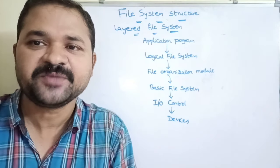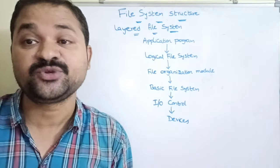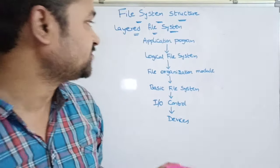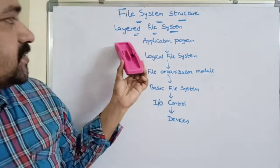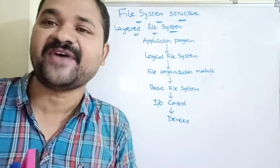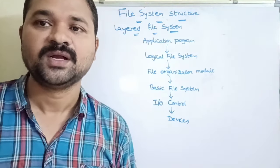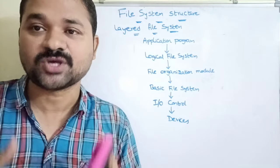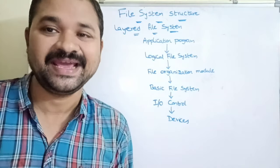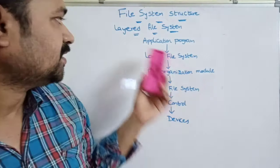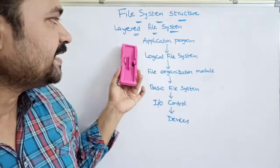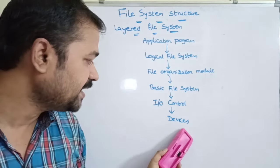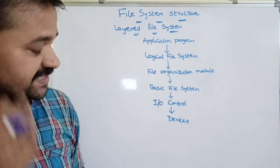These are the layers we have, which is why it is known as a layered file system — because the file system is organized into several layers. The top layer is the application program, whereas the bottom layer is devices.